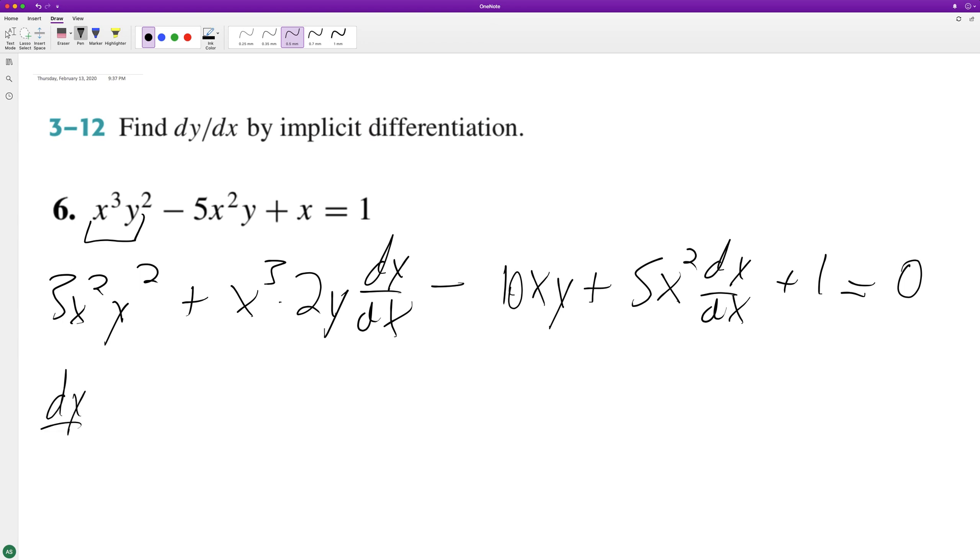So we have dy dx times the quantity x cubed times 2y and then plus 5x squared is equal to 10xy minus 3x squared y squared minus 1.